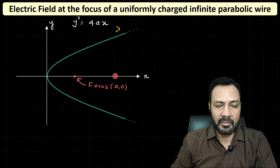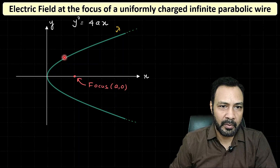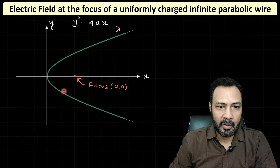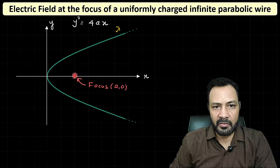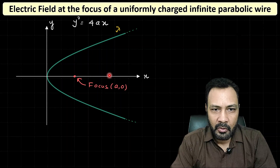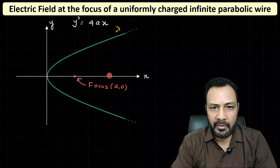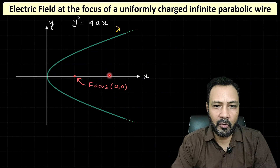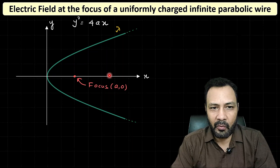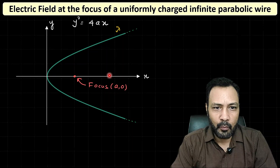By symmetry, the electric field has to be along the positive x-direction. If I take two symmetric points with respect to the x-axis — one point here and one point here — the electric fields due to each point are mirror images, so their y-components cancel. The resultant electric field will be along the positive x-direction.